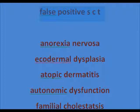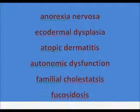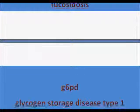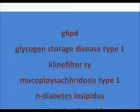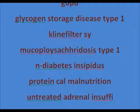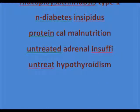To recap, the false positive sweat chloride causes are: anorexia nervosa, ectodermal dysplasia, atopic dermatitis, autonomic dysfunction, familial cholestasis, fucosidosis, G6PD deficiency, glycogen storage disease type 1, Mauriac syndrome, mucopolysaccharidosis type 1, nephrogenic diabetes insipidus, protein calorie malnutrition, untreated adrenal insufficiency, and hypothyroidism. I hope you liked it — please like and comment. Thank you.